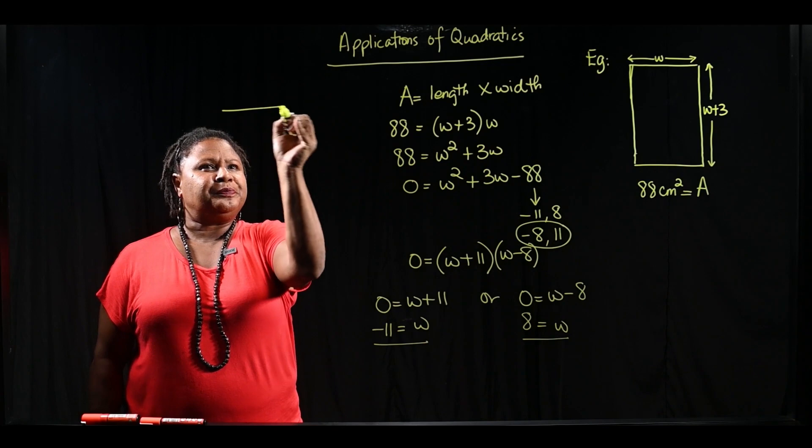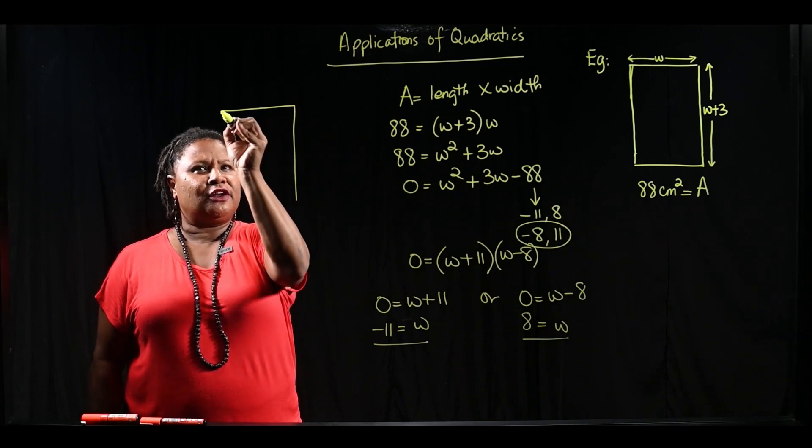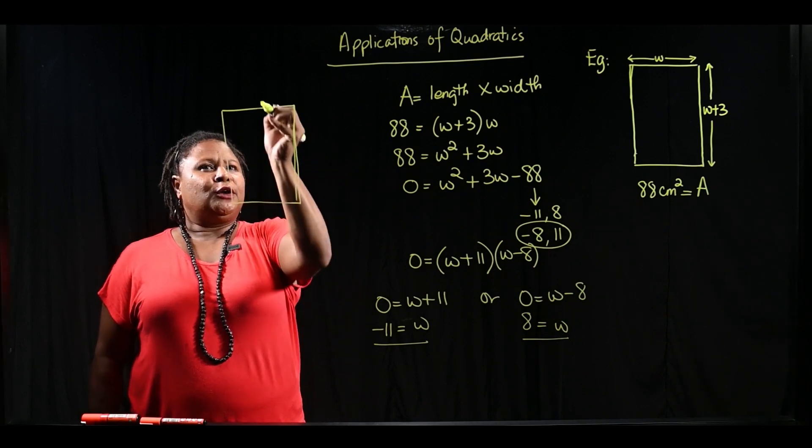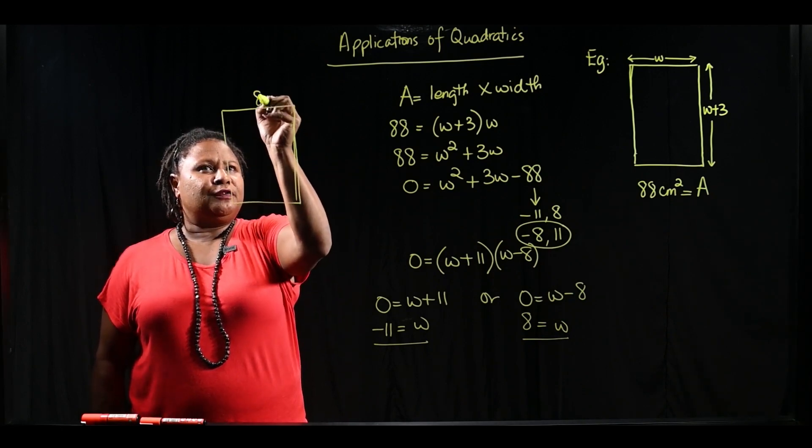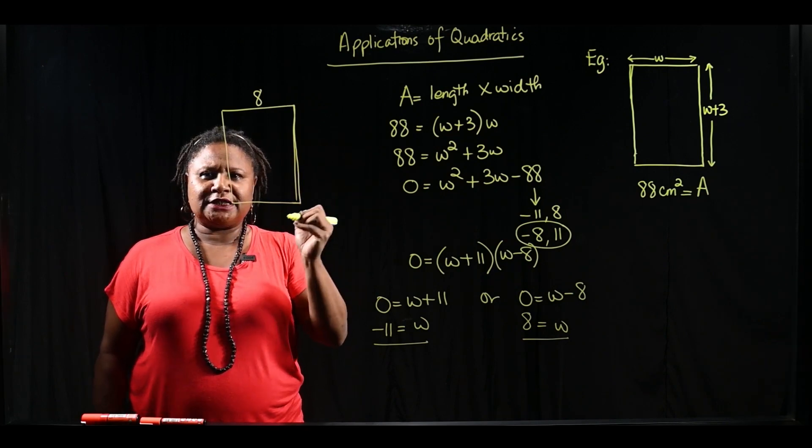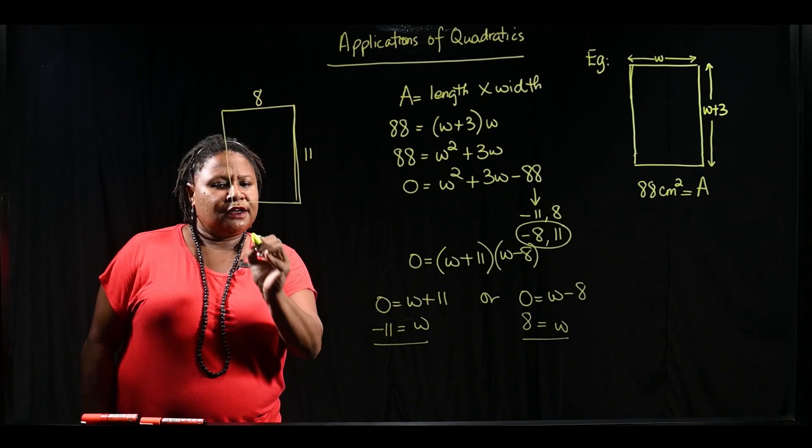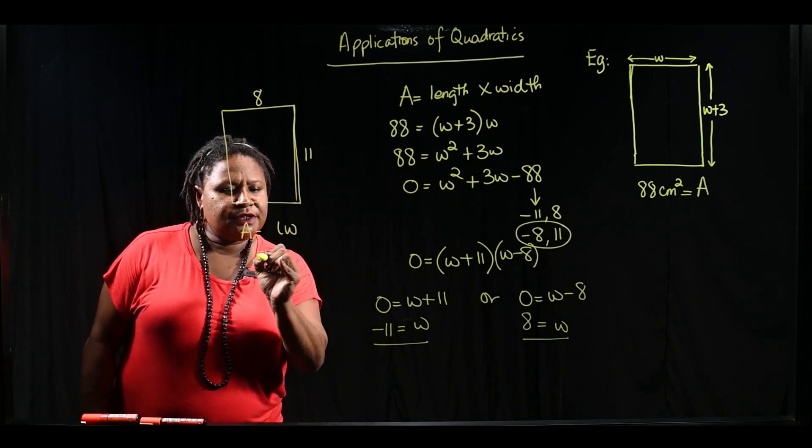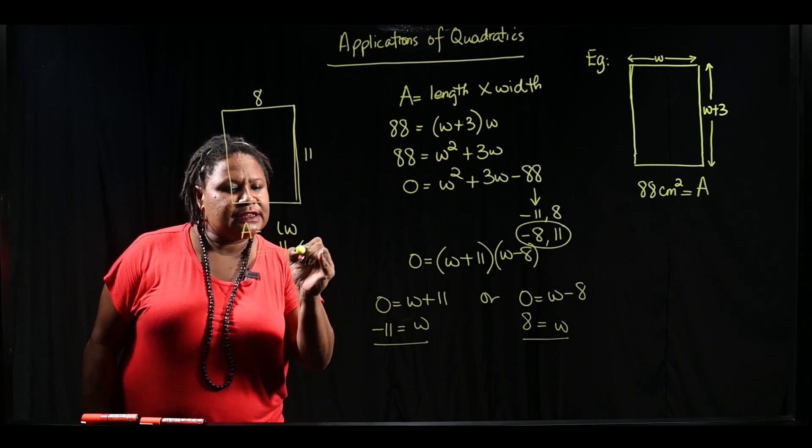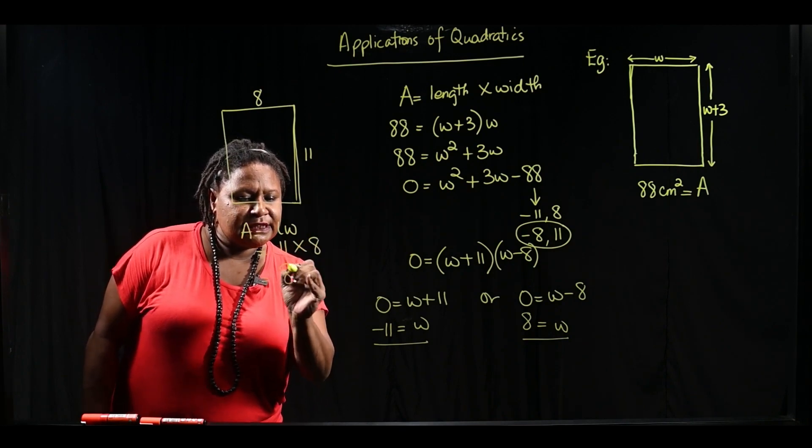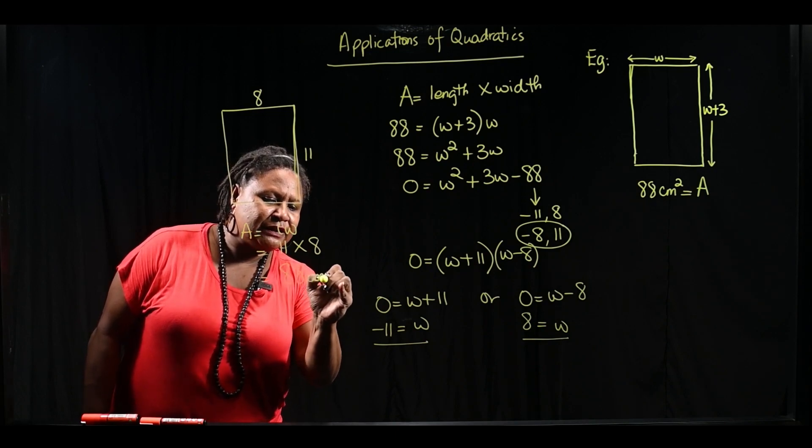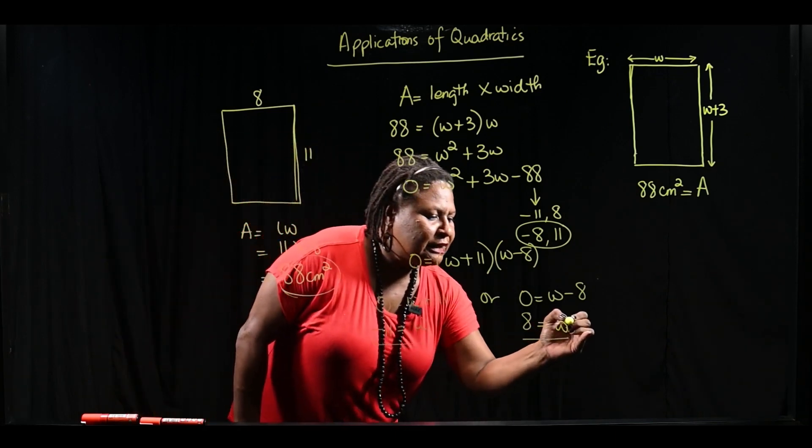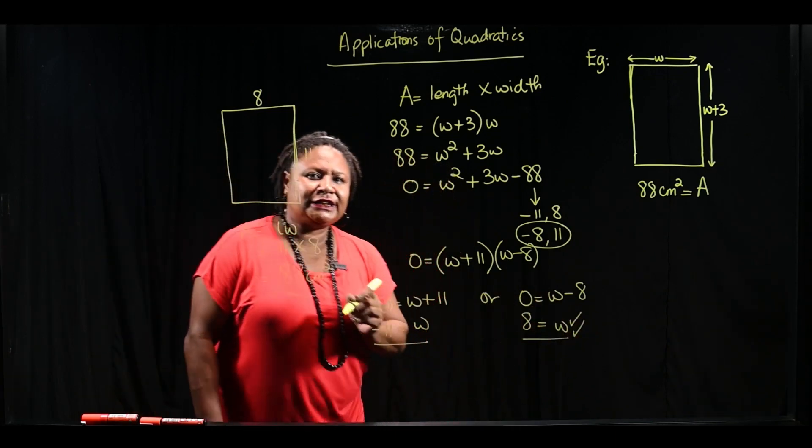So let's check that we have our rectangle with a width of 8 and a length of 8 plus 3, which is 11. So area equal to length times width, which is 11 times 8. The area is 88 square centimeters. Which makes this answer correct.